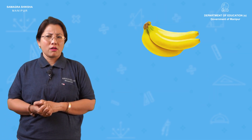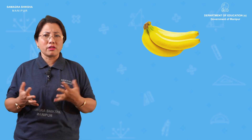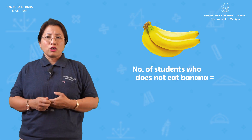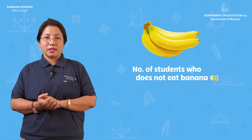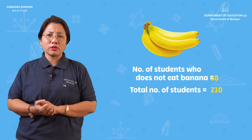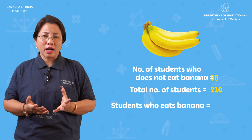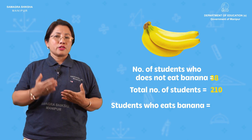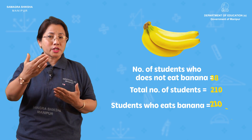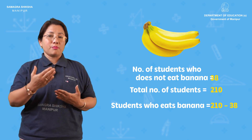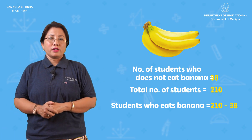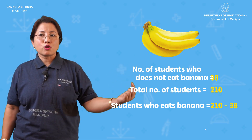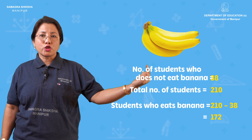Now for bananas. There are 210 students. 38 students did not take a banana. So the banana count is 210 minus 38, that equals one hundred and seventy-two bananas.